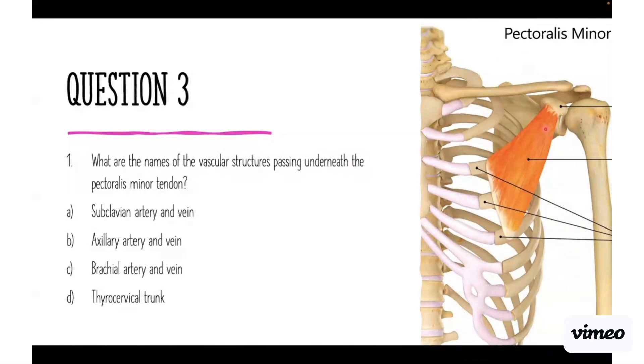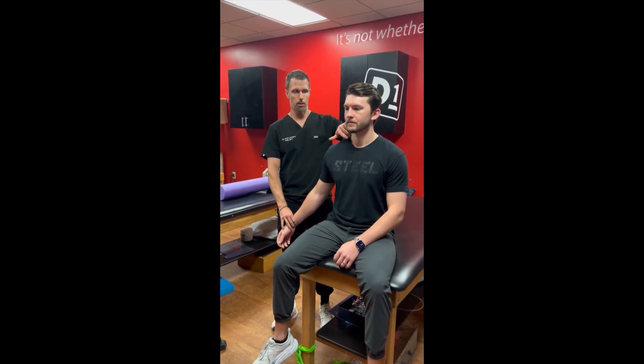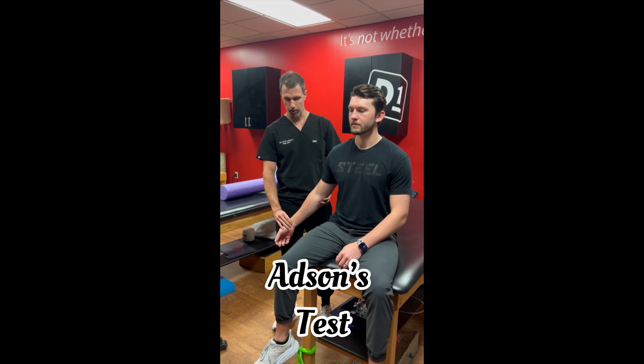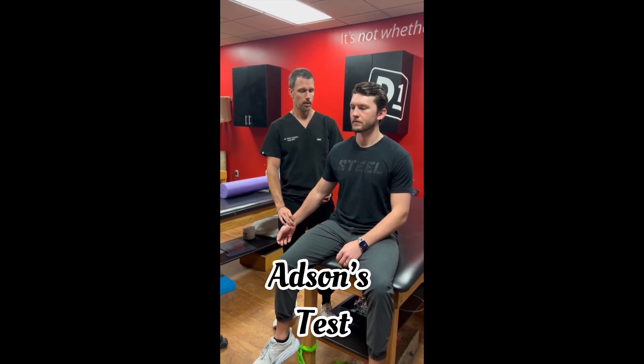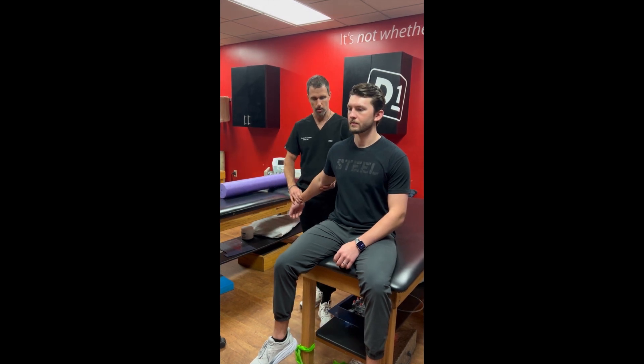Here are some special tests for thoracic outlet syndrome. We're going to start with one that analyzes compression between the anterior and middle scalene. It's called the Adson's test. I'll feel for the pulse and find it. We got a good pulse here, so I'm going to abduct his arm at 30 degrees and then extend his arm.